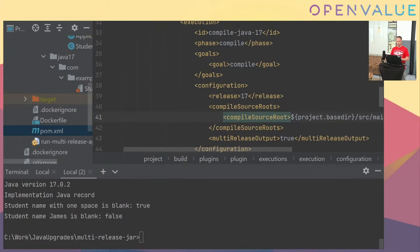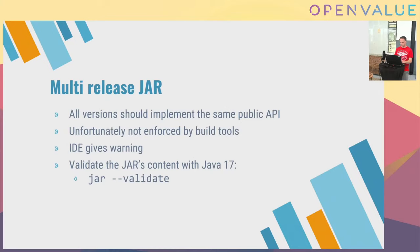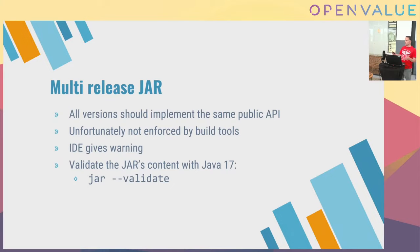It's quite a nice feature — for instance if you have performance improvements or special new methods that perform better in a newer version, you can put them in a separate package. Customers on a recent Java version can use those improvements; customers still on an old version can use the slower version. One important caveat: the public API — the public methods the class has — should be the same, otherwise you might get runtime issues. The build tool doesn't automatically validate this, but IntelliJ gives a nice warning, and from Java 17 you can check it with a command. I wouldn't do this for your entire codebase as it's a maintenance nightmare, but for small improvements in certain areas it's a nice trick.